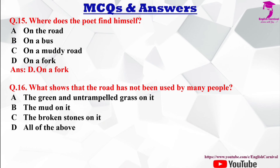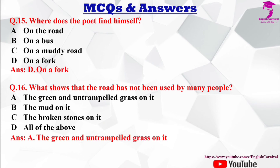Question number 16: What shows that the road has not been used by many people? Options: A) the green and untrampled grass on it, B) the mud on it, C) the broken stones on it, D) all of the above. The correct answer is A — the green and untrampled grass on it.